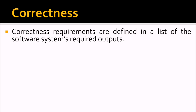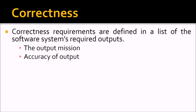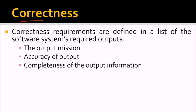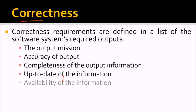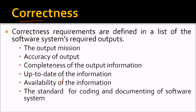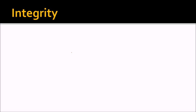Correctness requirements are defined as a list of the software system's required outputs — the accuracy of the output and the completeness of the output information. The information needs to be up to date and properly available. Correctness also includes the standard of coding adopted and the documentation of the software system.